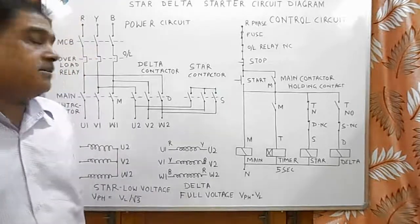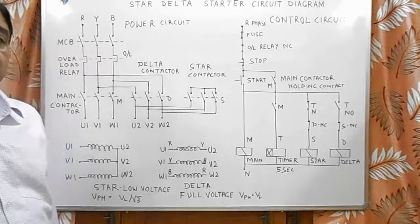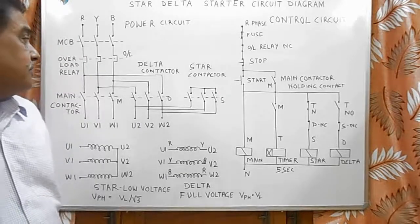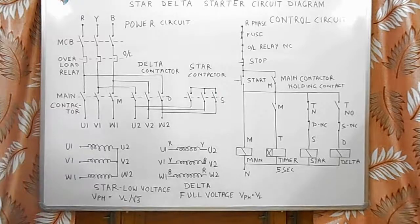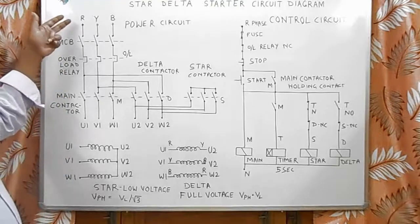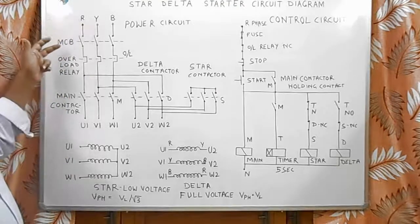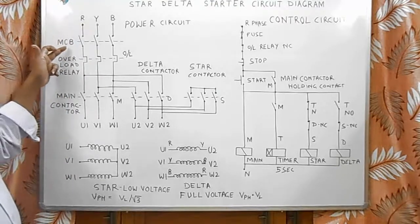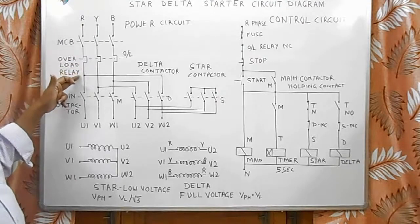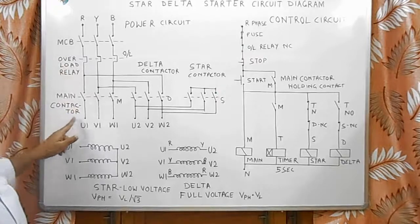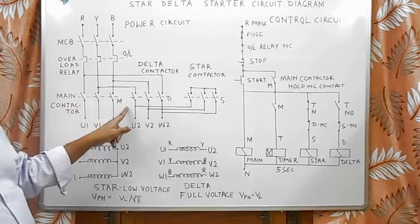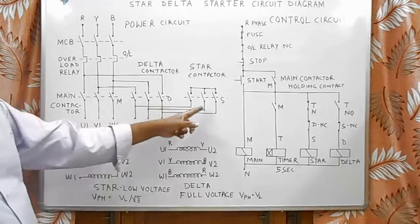In star-delta starter, there are three contactors used. The power supply, three-phase supply received from pole, goes to MCB, from there it goes to overload relay and then it goes to three contactors: main contactor, delta contactor, and star contactor.